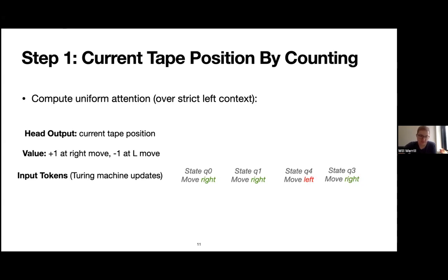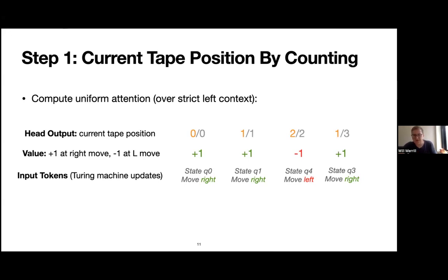This result assumes strict causal masking — attending only to things strictly to your left, not including the current token. That's an assumption not typically used in practice, but it simplifies the counting. The key idea is that the input tokens encode the moves made by the Turing machine, including what finite state we're in and whether we move right or left. Summing these gives us the current tape position, encoded as a fraction due to how attention works.